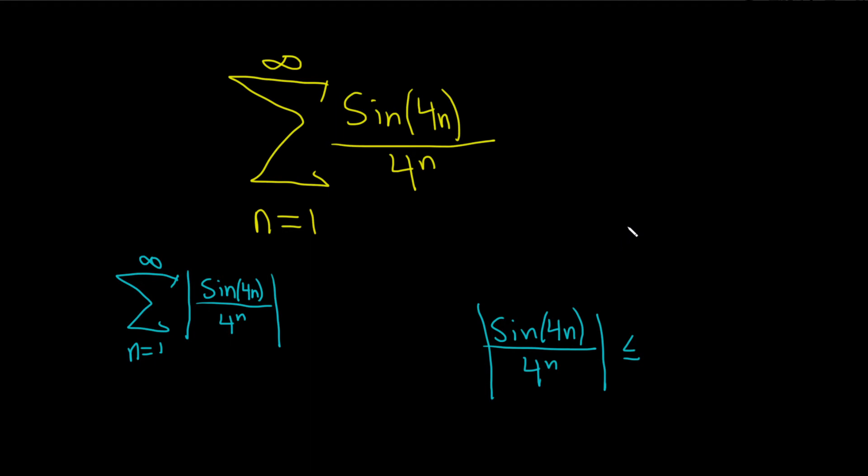Well, sine is special. The absolute value of sine x is less than or equal to 1. So this is less than or equal to 1 over 4 to the n. And you can drop the absolute value on the bottom because it's already positive.